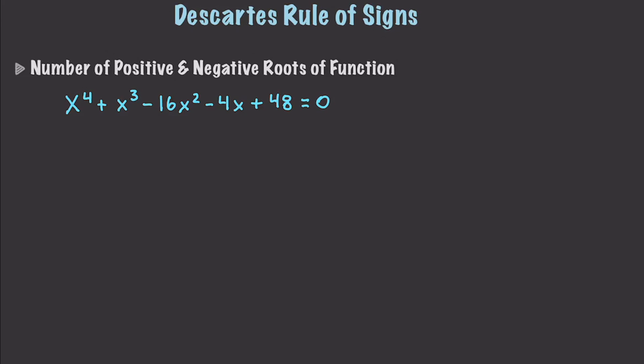Okay so that is our goal. What we can do is use Descartes' rule of signs. Whenever we use it we focus on the signs of the coefficients. So here we have a positive for x to the fourth, another positive for x to the third, a negative for 16x squared, another negative for 4x, and then a positive for 48. Now what we do is mark where the signs change. We start off with positive then positive — nothing changed. Then we get a negative, so something has indeed changed. We mark that change right there.